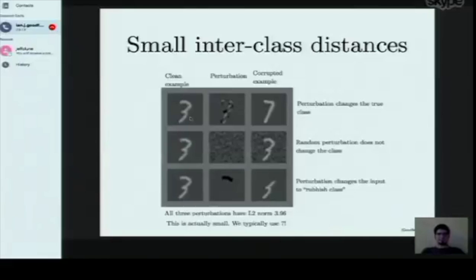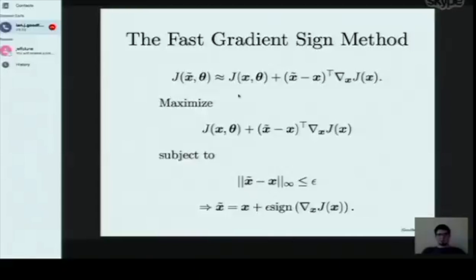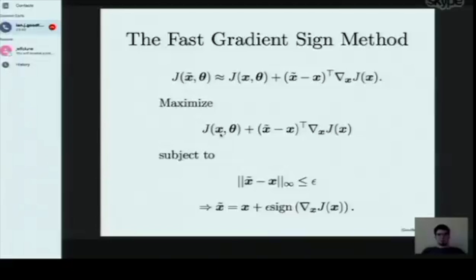You can build adversarial examples very easily in closed form by taking the gradient of the cost function with respect to the input and thresholding it to just +1 or -1 — this is the fast gradient sign method. It's based on a Taylor series linearization of the cost around the present input, and then finding the worst perturbation under a max-norm constraint. For deep neural nets, the model is close enough to linear and the cross-entropy loss close enough to a hinge loss that this actually works very well in practice.